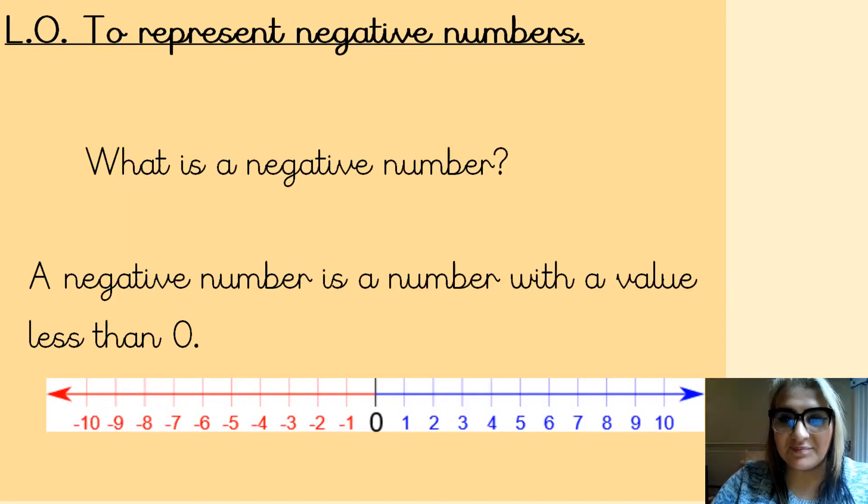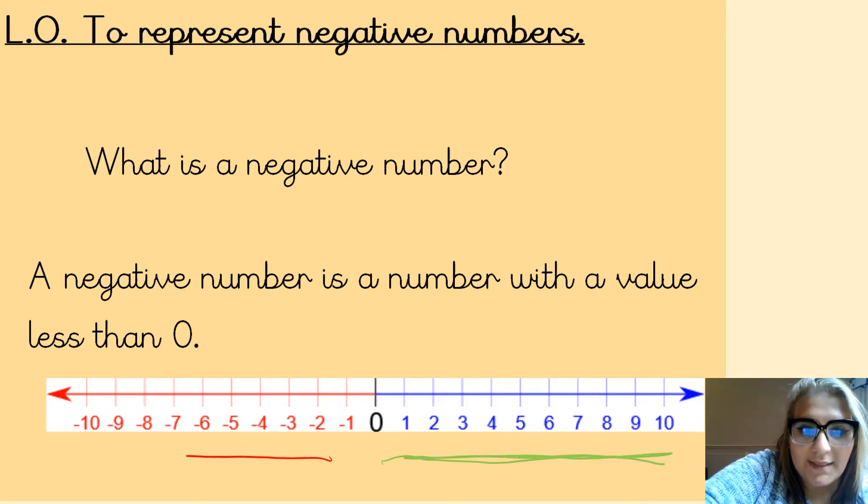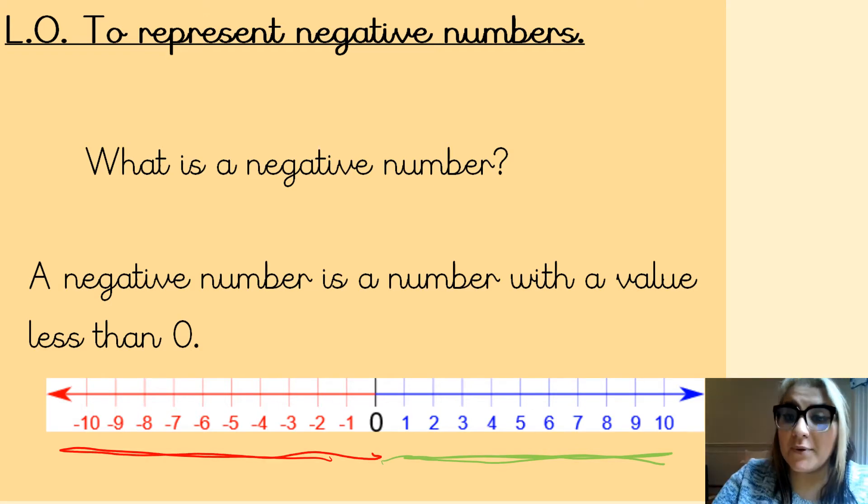Amazing. So, what is a negative number? A negative number is a number with a value less than zero, as you can see on this line here. So you've got all your positive numbers on this side of the line after zero, and you've got all your negative numbers on this side of the line before zero.